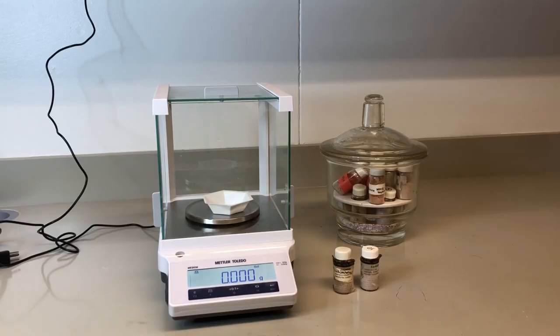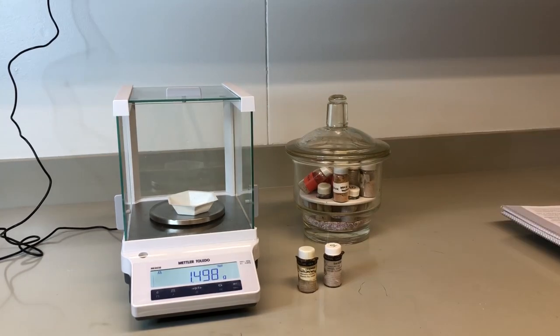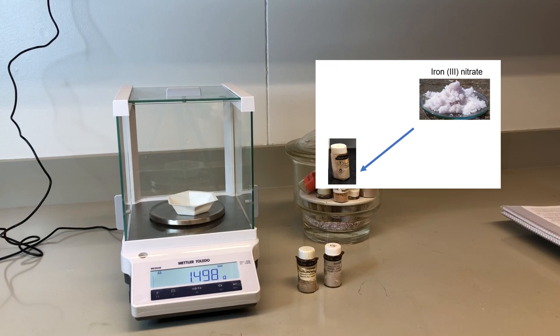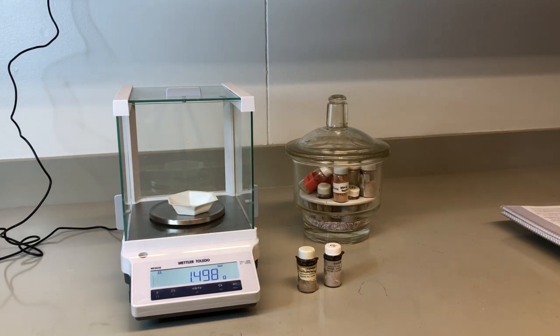We will weigh out our iron nitrate nonohydrate. This solid is stored in a desiccator. These are sealable enclosures used to protect chemicals which are hygroscopic. We must weigh out 1.5 grams. This solid should be colorless. Any tint of pink or yellow means it is decomposed.